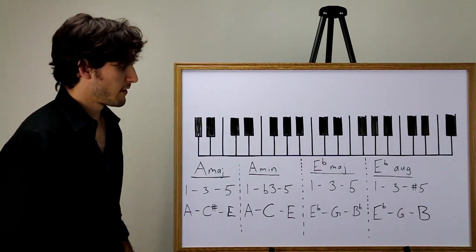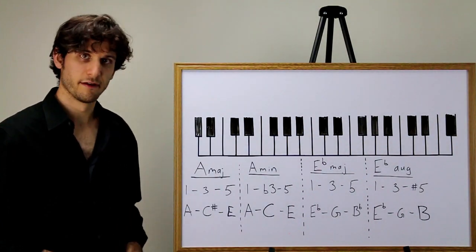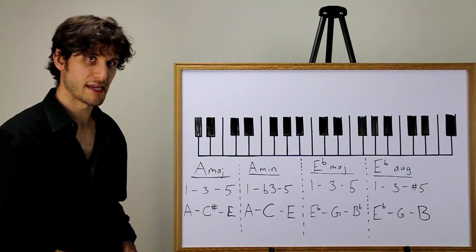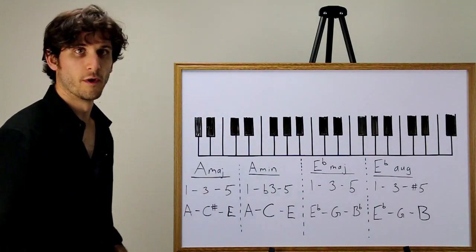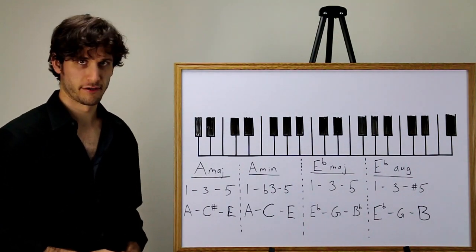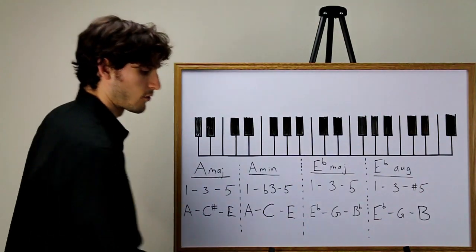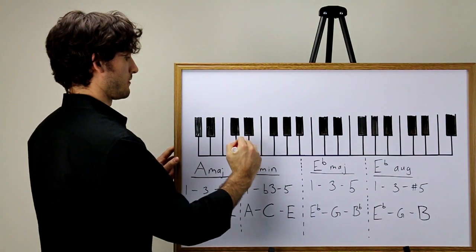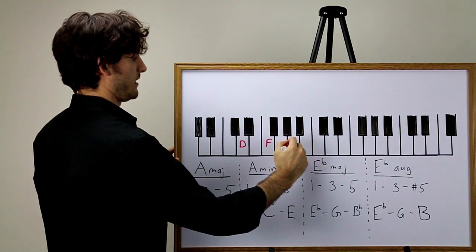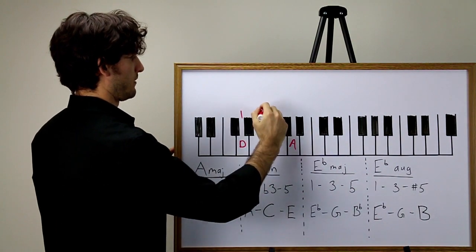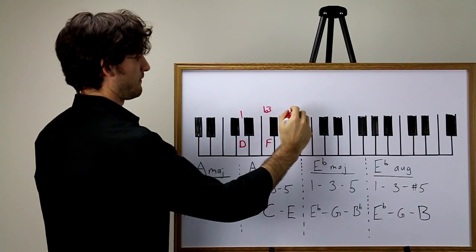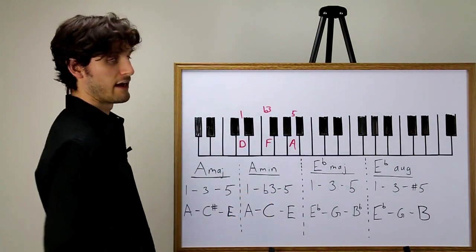It's very useful to think about triads in terms of this root third fifth construction because now we can ask questions like this: What is the flat third of D minor? Well, the D minor chord has D, F, and A. So this would be one, flat three, five. So the flat third would be F.